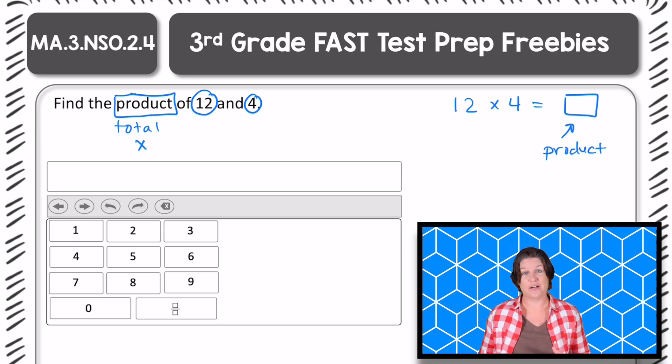To find the product of 12 and 4, you could either draw 12 groups of 4, you could draw an array with 12 going down and 4 in each row, you could repeatedly add 4 twelve times or 12 four times.